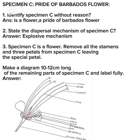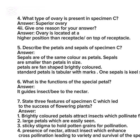Question four: what type of ovary is present in Specimen C? Answer: superior ovary. Question four (ii): give one reason for your answer. Answer: the ovary is located at a higher position than the receptacle, or on top of the receptacle.